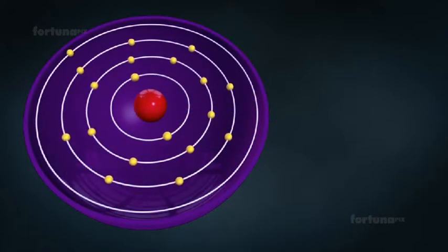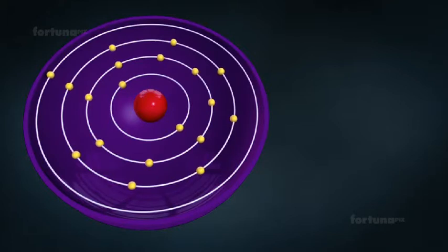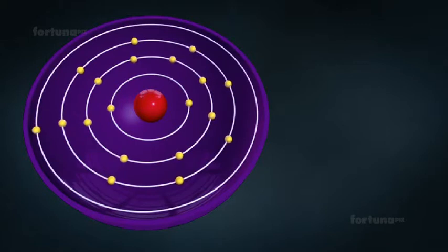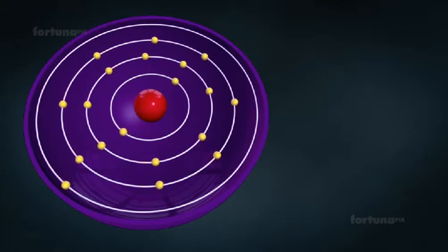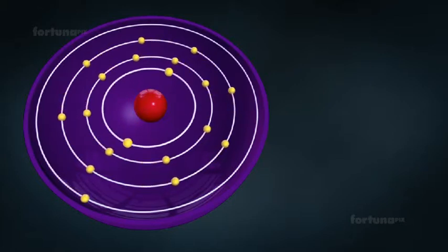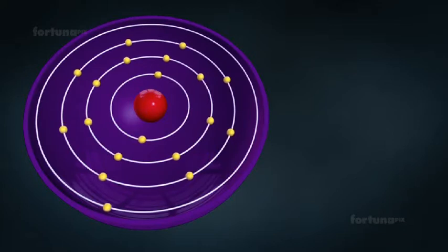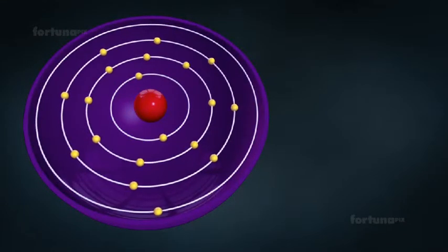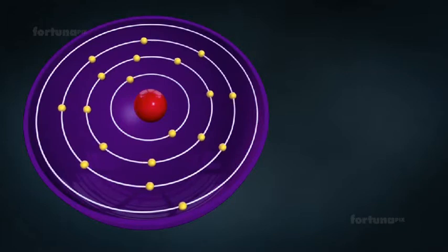Bohr postulated that when electrons are closer to the nucleus, they require less energy than those orbiting from farther away. As a means of differentiating between the energy levels, Bohr numbered them. Energy level 1 will be closest to the nucleus and the larger the number of the energy level gets, the farther away the electron will be from the nucleus.